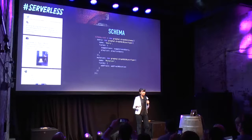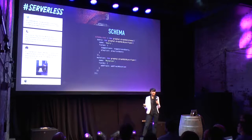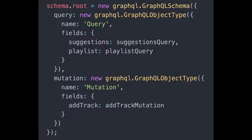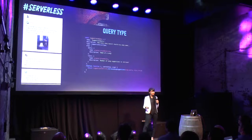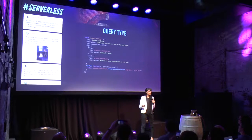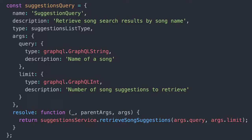The schema defines what queries the client is allowed to make, and what data the server can send back to the client. There are two things that the client can query for: suggestions and a playlist, which are like GET requests, and then there's a mutation, which is like a POST request, so they can add a track. Each of these queries has its own type. The suggestions type returns objects of suggestions list type — these are all the properties of a song that you might want. And the interesting thing here is the resolve function.